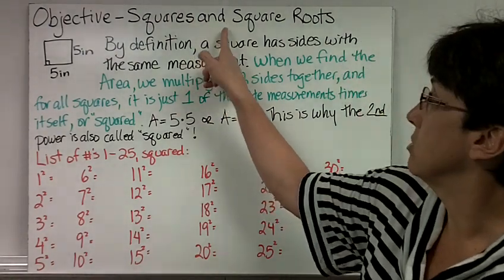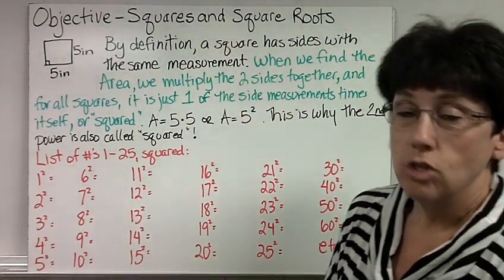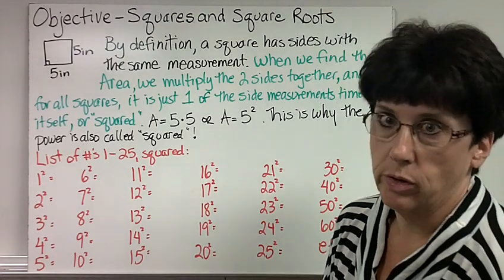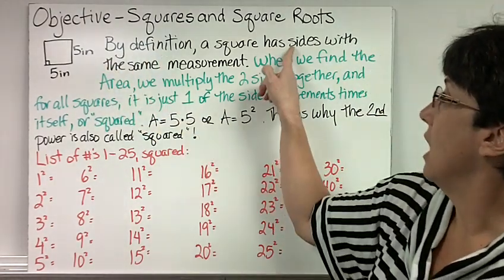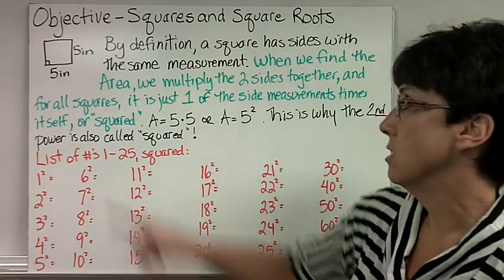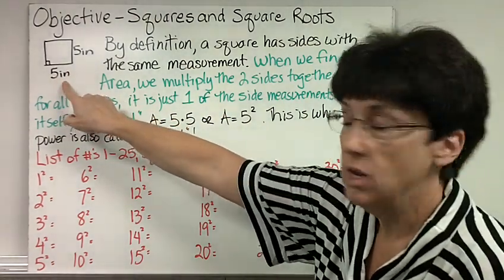Today's objective is squares and square roots. So let's just talk about what a square is. A square, by definition, has sides with the same measurement. So here, for example, we have a square.